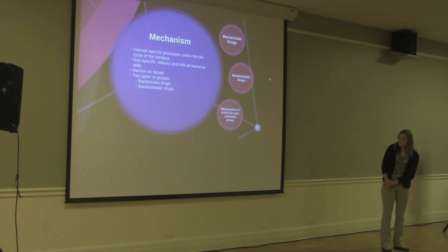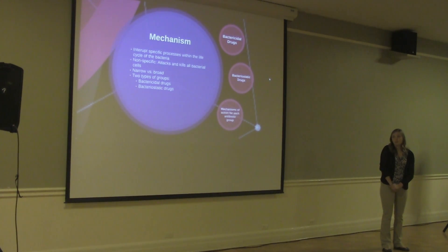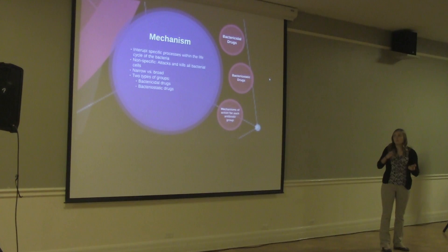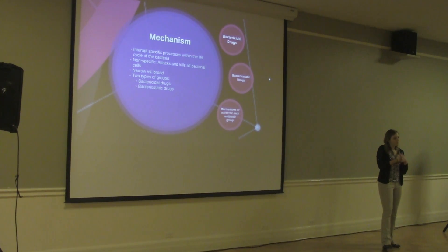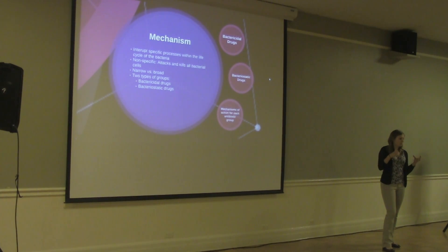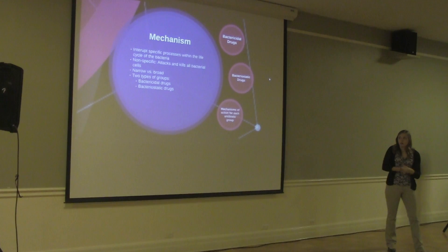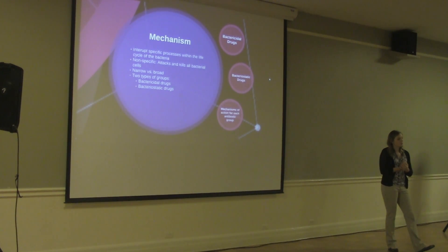The mechanisms of antibiotics interrupt specific processes within the life cycle of bacteria. They're non-specific, meaning antibiotics kill all bacteria — they don't target a single specific bacterium. There are narrow and broad antibiotics: narrow antibiotics target a certain shape or class of bacteria, and while they still kill anything similar to the target, they are better than broad-spectrum antibiotics, which kill everything.